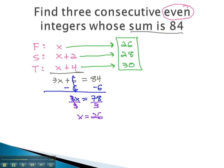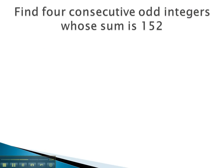Let's try one with odd integers. In this problem, we are asked to find 4 consecutive odd integers. We will clearly label the first, second, third, and fourth using our variables.